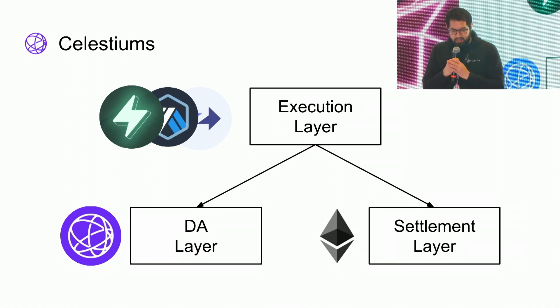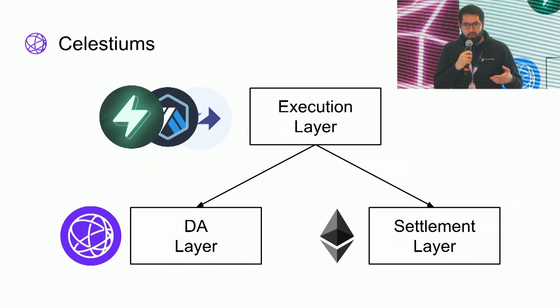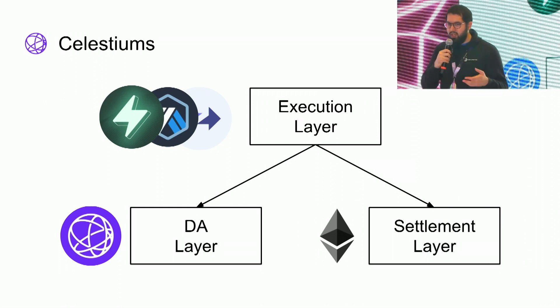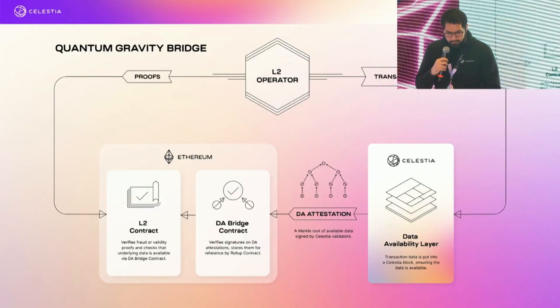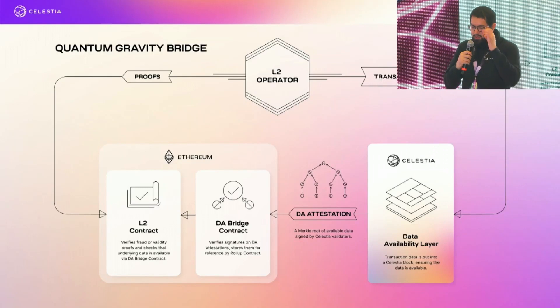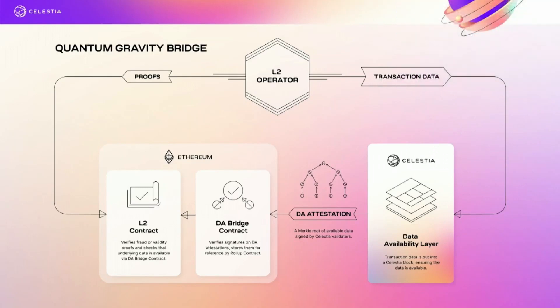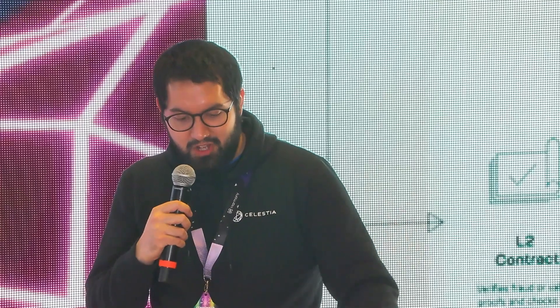This Celestium rollup uses Ethereum for settlement, which means it posts fraud proofs or validity proofs to Ethereum to handle deposits and withdrawals of tokens. This is accomplished through new technology we're developing — and this is all public and open source. The entire Celestia stack is public and open source; it's not some secret thing we're hiding. It's all out there.